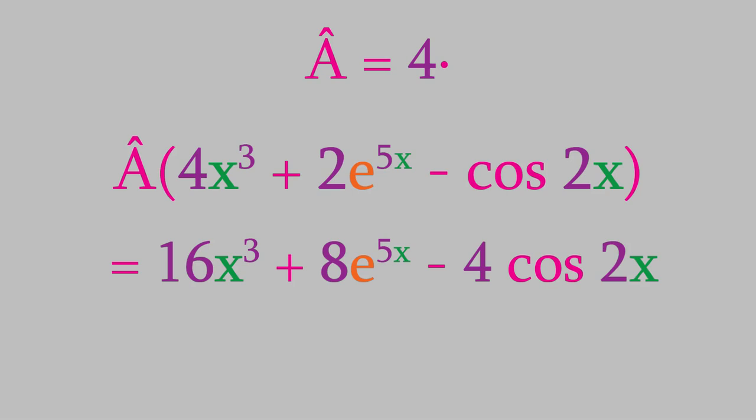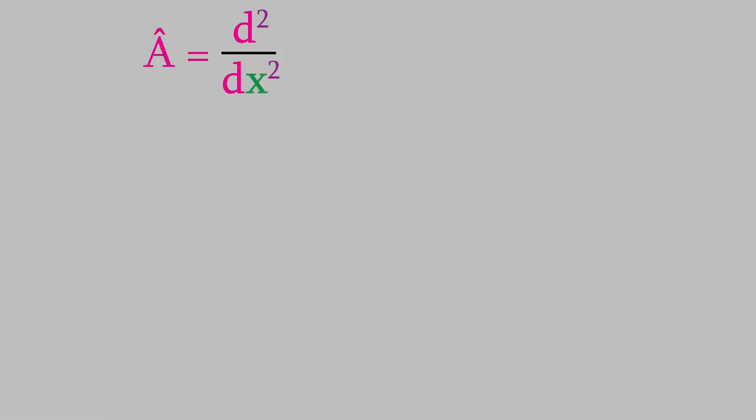Let's try another example, this time with a different operator. Suppose this time the operator a-hat takes the second derivative with respect to x of whatever follows the operator. So, for example, if we apply this operator to the function 8 times x, the result is 0, because the second derivative of 8x is 0.